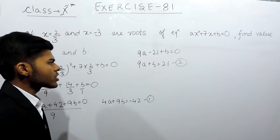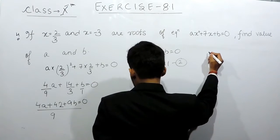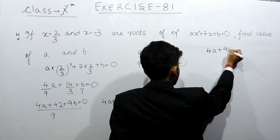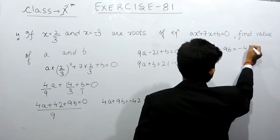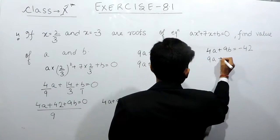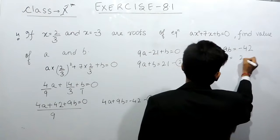Now we will solve these two equations simultaneously. So, the first equation is 4a plus 9b equals to minus 42 and the second equation is 9a plus b equals to 21.